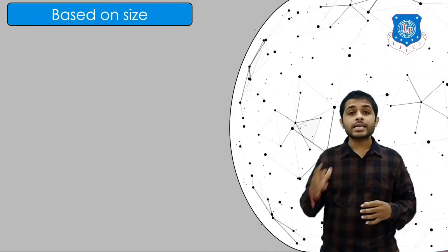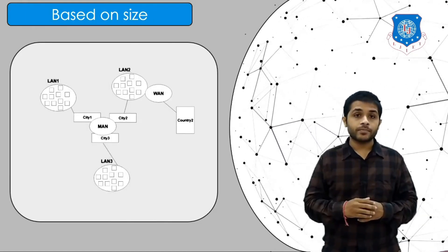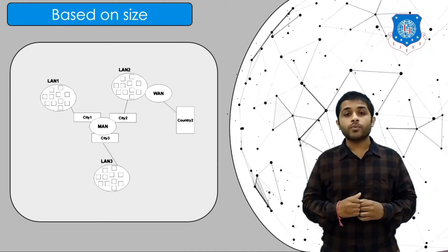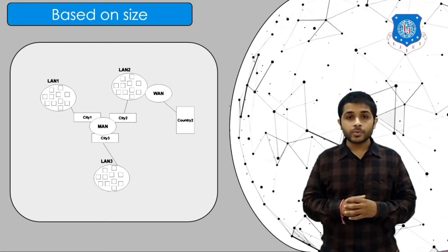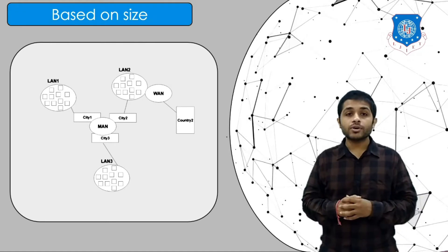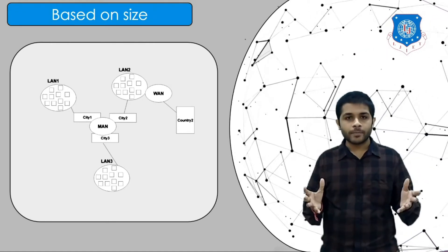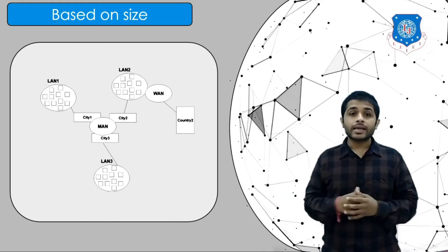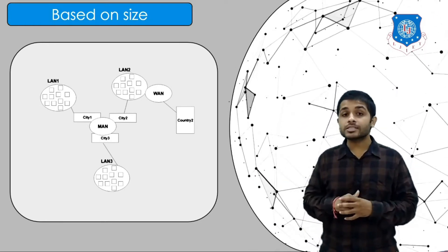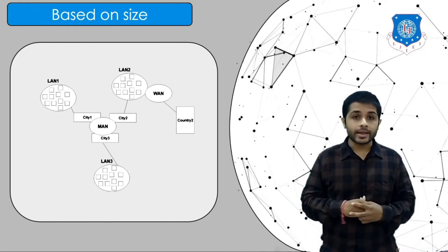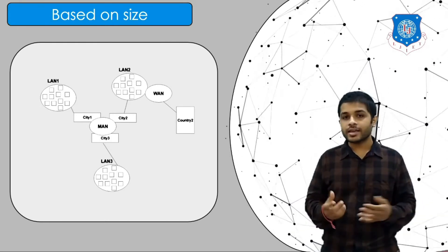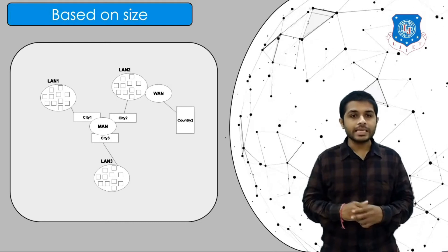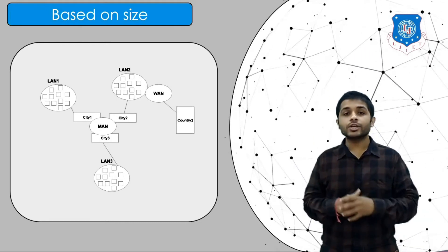Based on size, the network can be divided into three types: LAN (Local Area Network), MAN (Metropolitan Area Network), and WAN (Wide Area Network). The example of a LAN is the network at your home or college, which is very small. MAN is a combination of LANs and can be present at a particular region or city. WAN is the collection of LANs and MANs. Let's compare LAN, MAN, and WAN so you can get a clear idea.